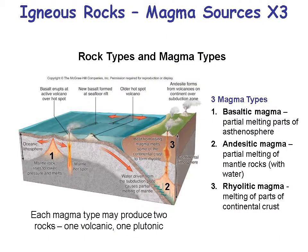There are three types of magma: basaltic, andesitic, and rhyolitic. Basaltic magma is the partial melting of the asthenosphere — at a divergent plate boundary, basaltic magma comes up from partial melting of the asthenosphere from the mantle below. Andesitic magma is a partial melting of mantle rocks with water, and rhyolitic magma would be partial melting of continental crust. You can see where the three types of magma tie into different parts of plate tectonics.